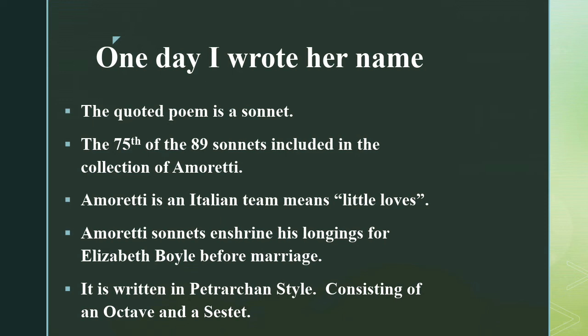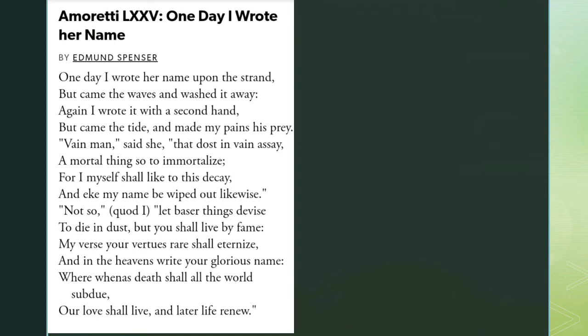The Amoretti sonnets express Spenser's longing for Elizabeth Boyle before their marriage. The collection is written in the Petrarchan style, consisting of an octave and a sestet. Petrarchan style is associated with love poems. When we read the poem, it divides into an octave and a sestet.